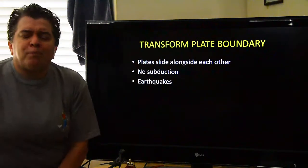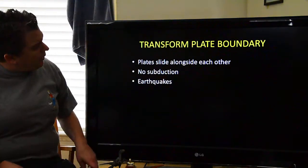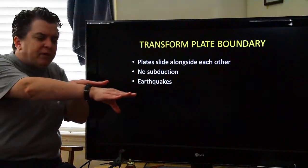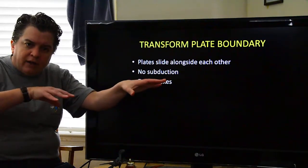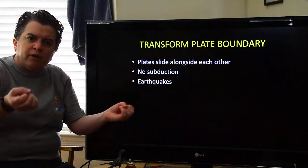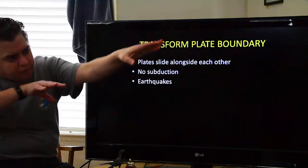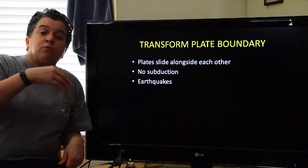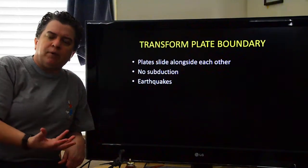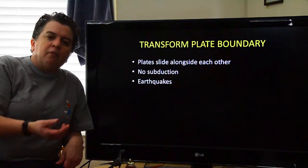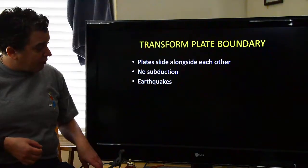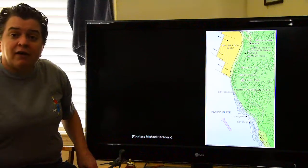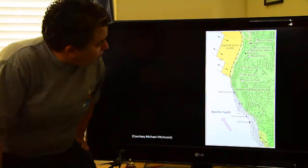The last of our plate boundaries is the transform plate boundary. In this case, the plates are simply sliding alongside each other — not pushing against each other, not pulling apart, just sliding alongside. There's no subduction, which means we're not going to get any melting to create big volcanoes. But we do get a lot of earthquakes. A great example of this is the San Andreas Fault.